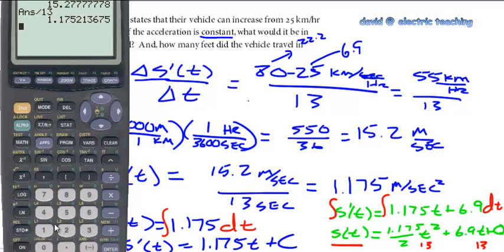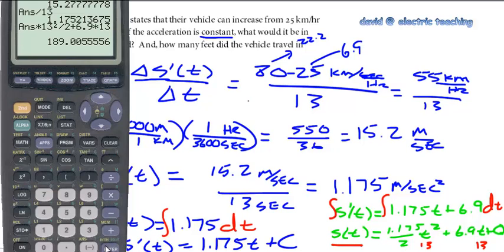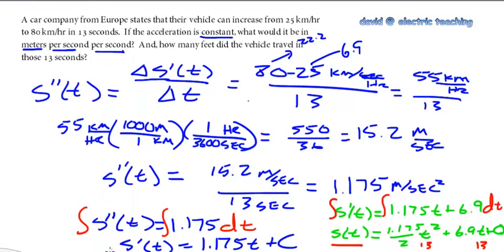Back to the calculator: I take 13 squared times 1.175 divided by 2, plus 6.9 times 13. This tells me how far I've traveled in meters, and it looks like I've traveled approximately 189 meters. So back to the question: how far did I travel? 189 meters during that acceleration. I hope this has helped — I'm David from Electric Teaching, thank you for listening.